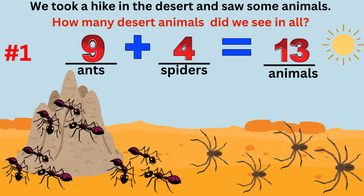The answer to the question is: we saw nine ants and four spiders, so there were 13 animals in all. The number sentence is 9 plus 4 equals 13.